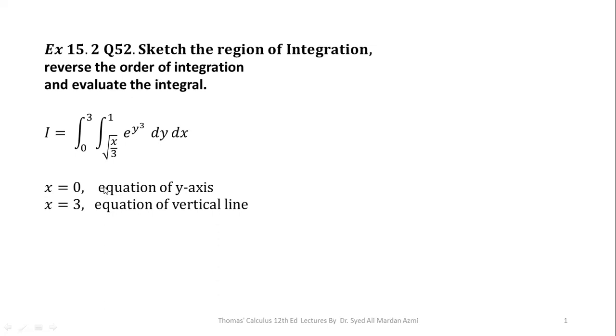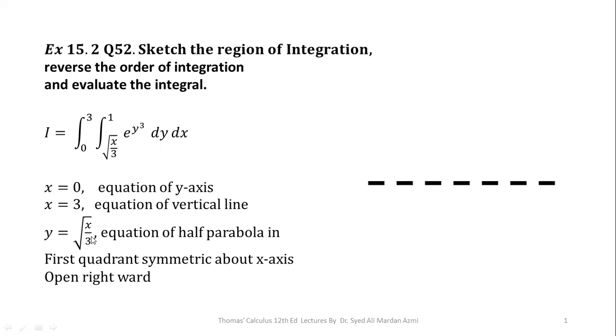x equal to 0 is the equation of y-axis, x equal to 3 is equation of a vertical line, which passes to a point along x-axis where x equal to 3. From y, we have y is equal to square root of x over 3. This is actually the equation of half parabola in the first quadrant symmetric about x-axis and open rightward. And then, y equal to 1 is the equation of horizontal line.